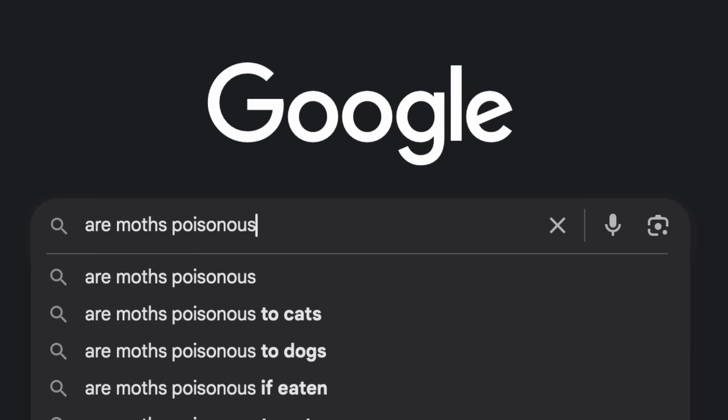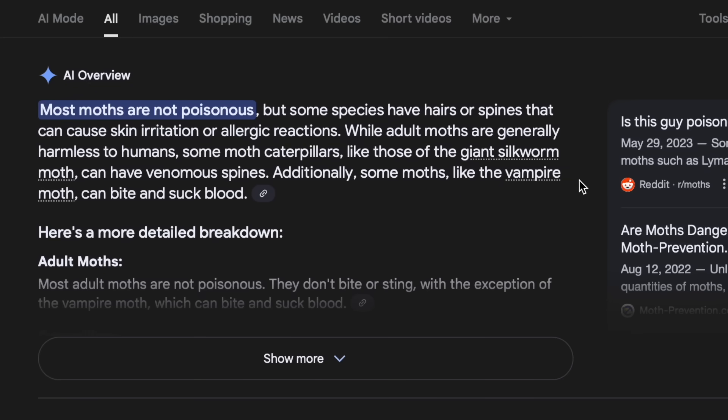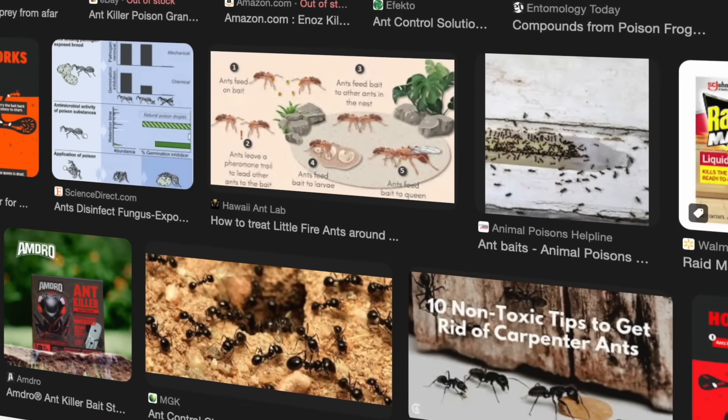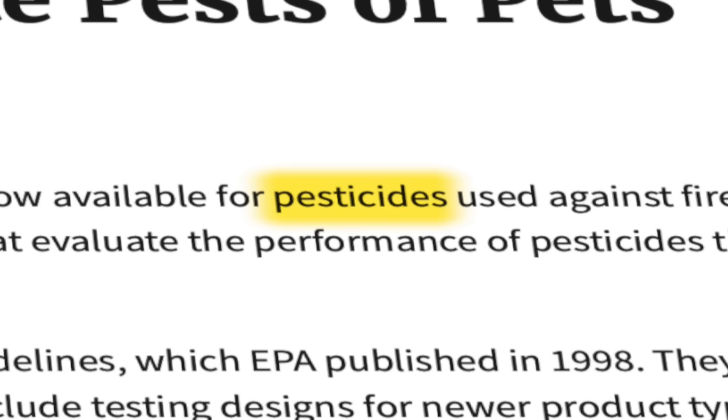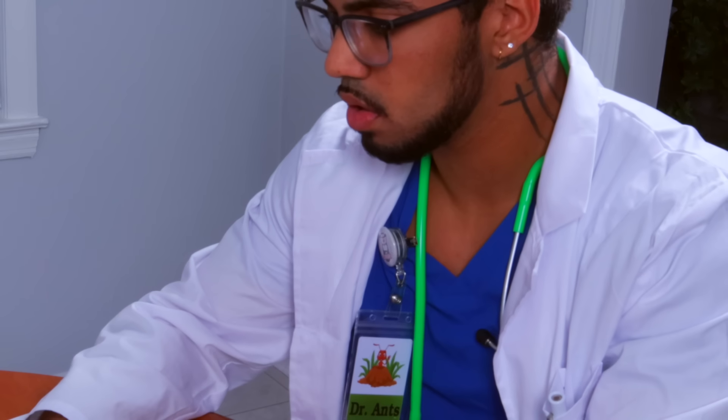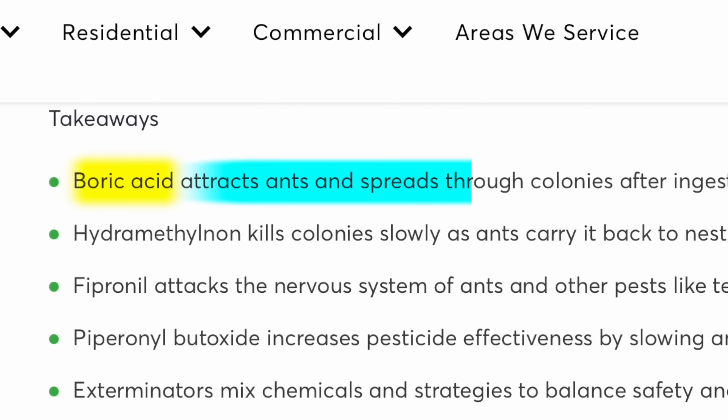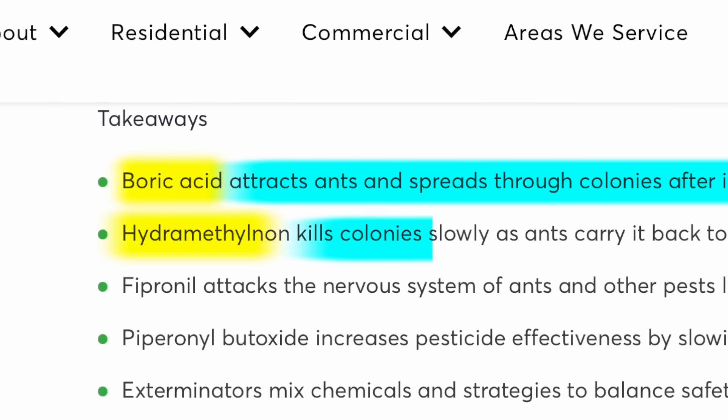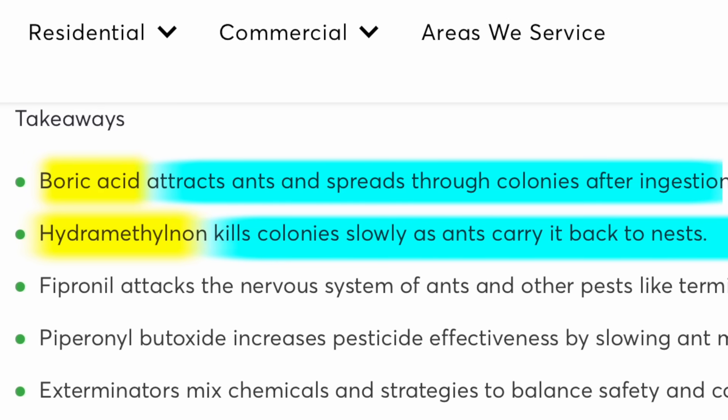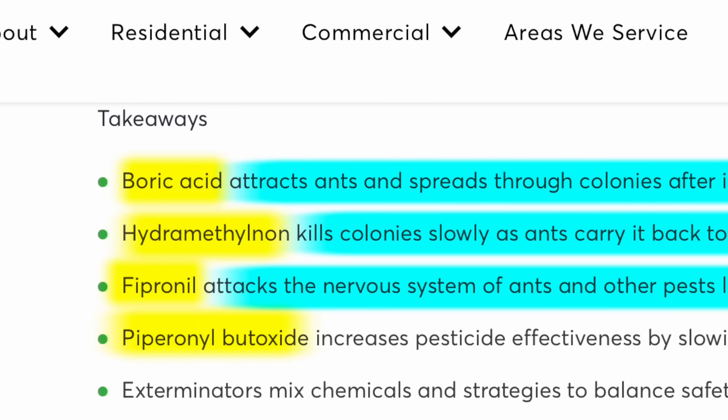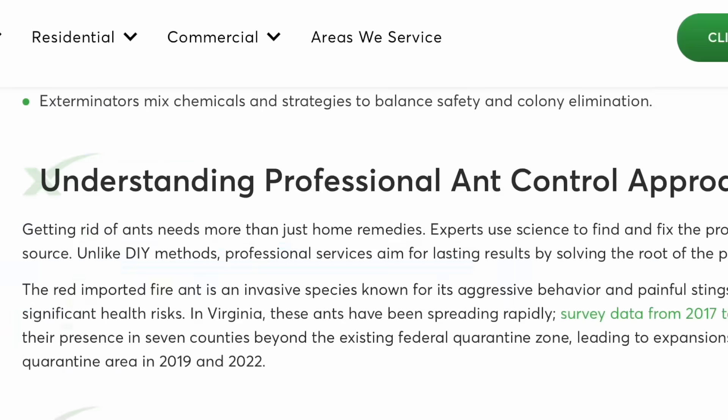Are moths poisonous? Okay, they aren't. But wait, what about other poisons? Ones that are specifically made to kill ants. What about pesticides? What the heck even are these? It says here that boric acid attracts ants and spreads through colonies after ingestion. Hydramethylnone poisons the ants as they carry it back to the nest. Fipronil attacks the nervous system of ants. And piperonyl butoxide slows ant metabolism. Wait. Oh no.